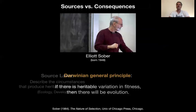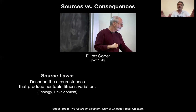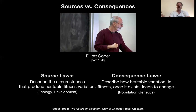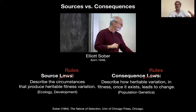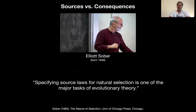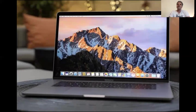From this simplest possible definition, Sober immediately sees two sides of the coin. He calls them source laws — which describe the circumstances that produce heritable fitness variation, covering physiology, metabolism, development, and ecology — and consequence laws, which describe how heritable variation in fitness, once it exists, leads to change. That is population genetics and the theory of drift and selection. I would call these source rules and consequence rules, because there are no laws in biology, especially not on the source side. Specifying source laws for natural selection, Sober says, is one of the major tasks of evolutionary biology. So if somebody says developmental biology is not part of evolutionary biology, that is just wrong.